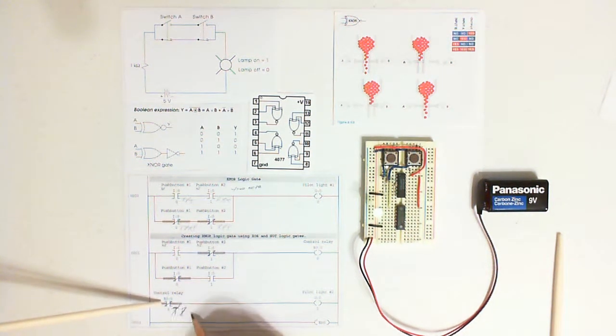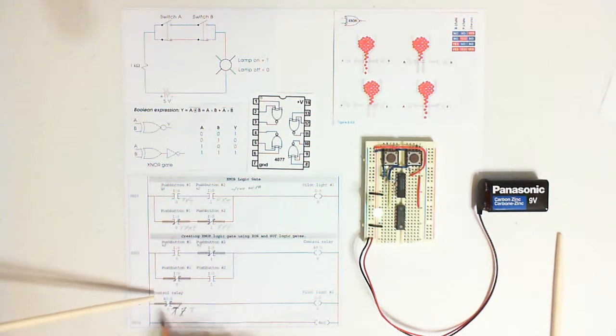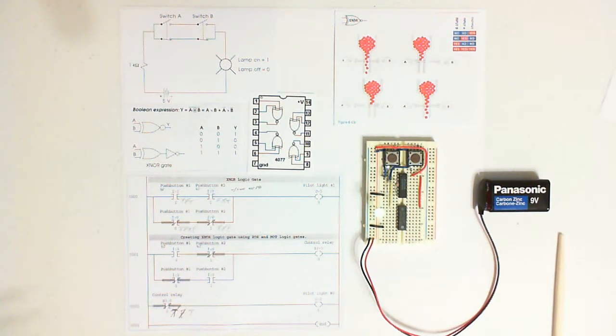You release the button, examine if open, this becomes true, turning on the lamp. And that's how an X-NOR gate circuit works.